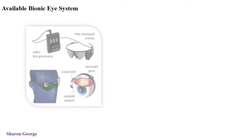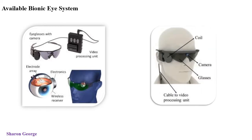Next is the available bionic eye system. In this picture we can see the available bionic eye prosthesis. Here there are glasses with a camera — the camera size is very small so it fits in the frame of the glasses — and a video processing unit. It provides pulse signals to the brain using a retinal implant for the blind person. It has a mini video camera that captures data, which is wirelessly transferred to the video processing unit. This converts the data into electronic signals, which are sent to electrodes that generate impulses interpreted by the brain, allowing the blind person to see like a normal human.